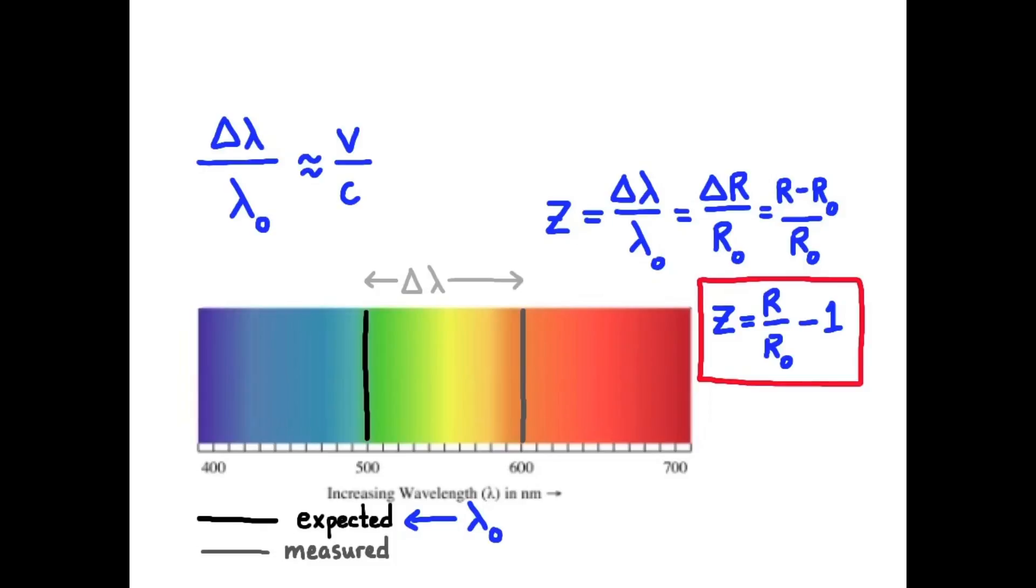Think of z as a measure of the degree of redshift. We'll call it redshift ratio. Since the Big Bang, space is always being stretched. The current stretching is denoted by capital R, the cosmic scale factor.